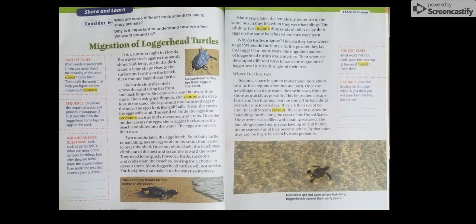Two months later, the eggs hatch. Each baby turtle or hatchling has an egg tooth on its snout that it uses to break the shell. Once out of the shell, the hatchlings climb out of the nest and scramble toward the water. They need to be quick, however. Birds, raccoons, and crabs roam the beaches, looking for a chance to devour them. Many loggerhead turtles will not survive. The lucky few that make it to the water swim away.